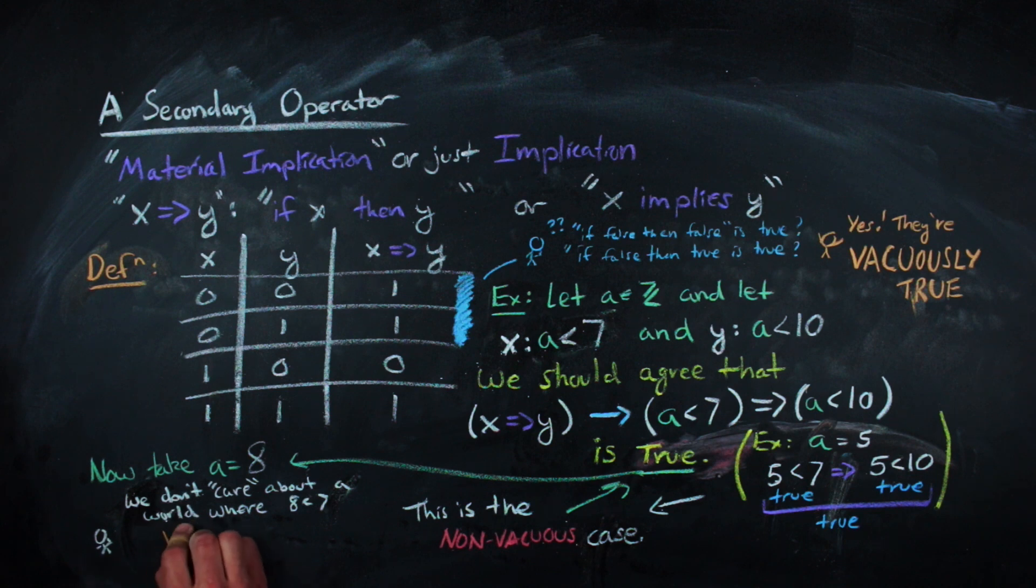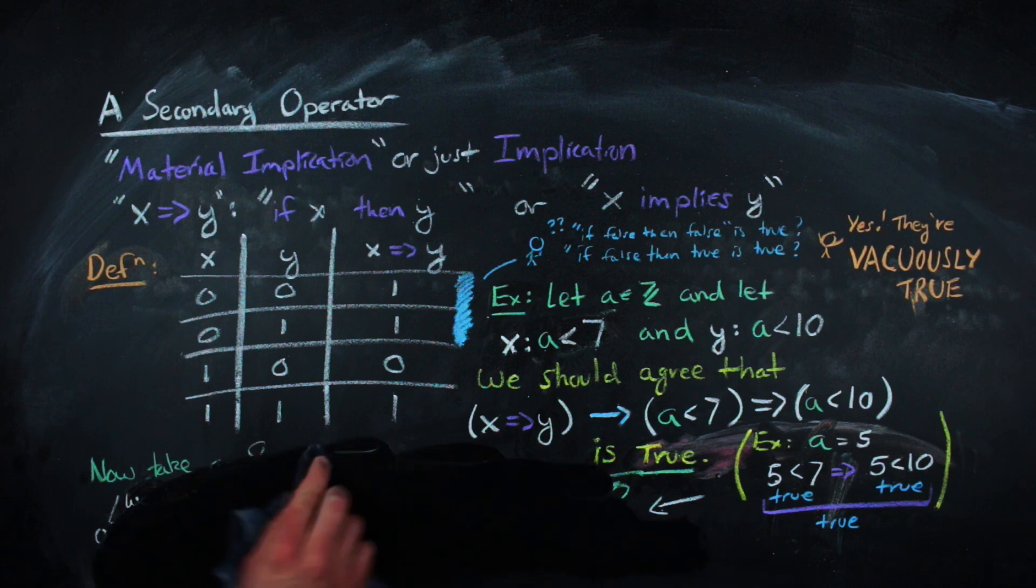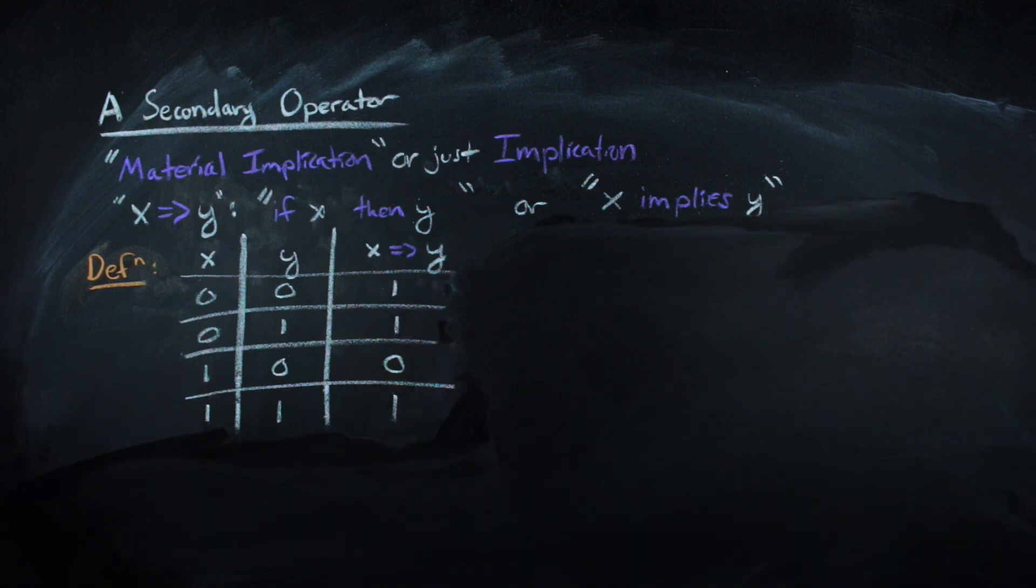So you're in a situation where there is nothing to determine if 8 less than 10 is true based on the information from 8 being less than 7.